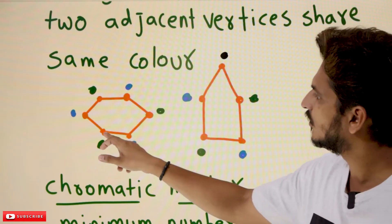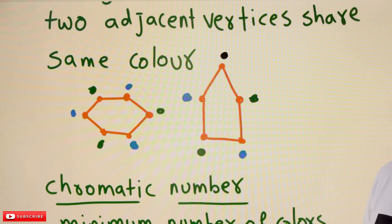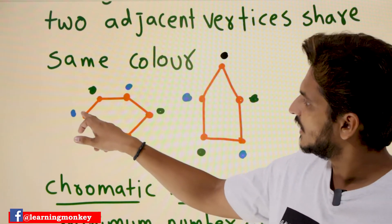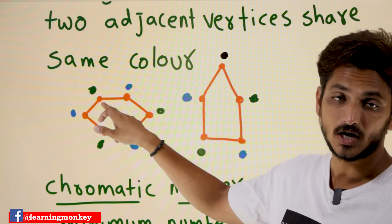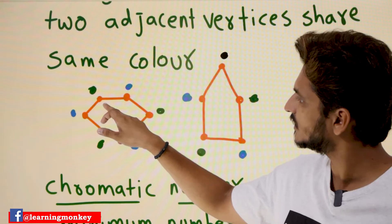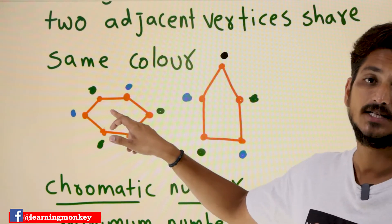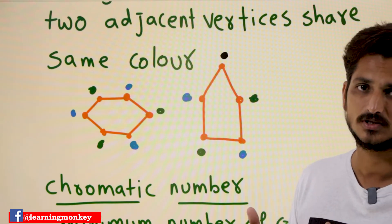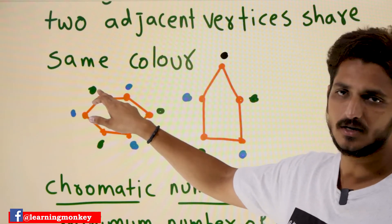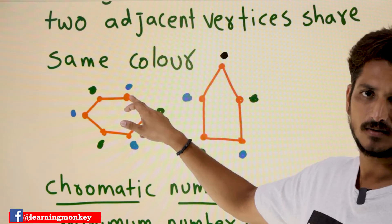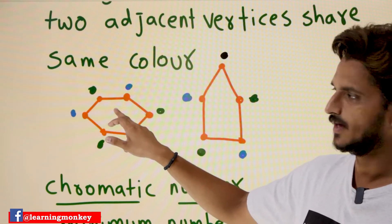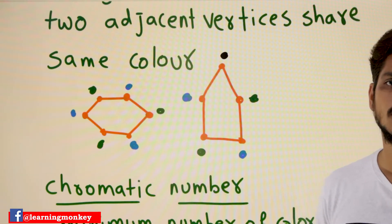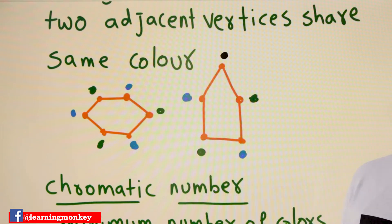With an example you will get a better understanding. Let's take this graph — there are a total of six vertices. To color this graph, two colors are needed. If you assign blue here, you cannot assign blue again to an adjacent vertex, because adjacent vertices should have different colors. So we assign blue here, green here, then blue again since these two are not adjacent, then green, blue, green — this is how we assign colors to the graph.